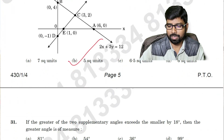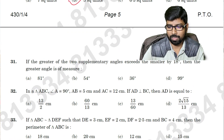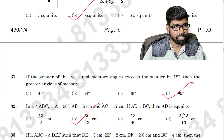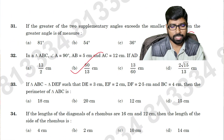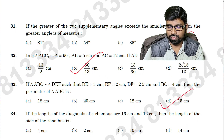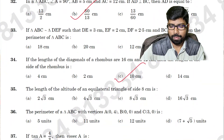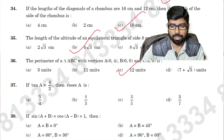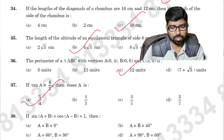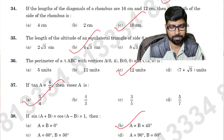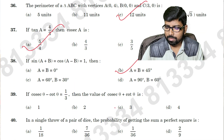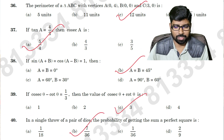Next, question number 31: option D. Question number 32: option B. I don't want to make this video too long. Question number 33: option D is the answer. Question number 34: option C is the answer. Question number 35: option B is the answer. Question number 36: option C is the answer. Question number 37: option A is the answer. Question number 38: option B is the right answer. Question number 39: option C. Question number 40: option B is the answer.